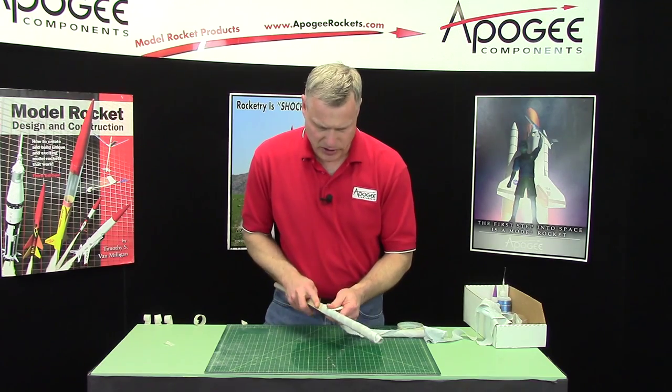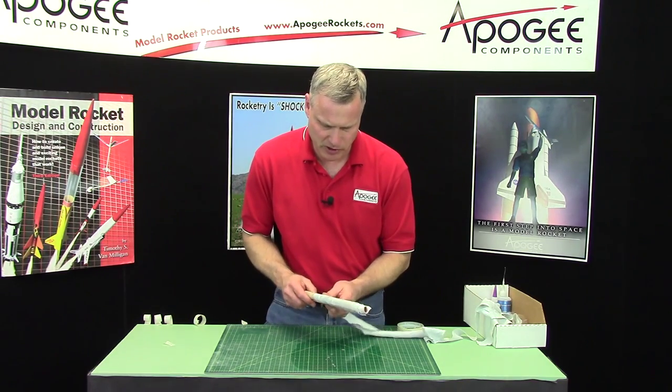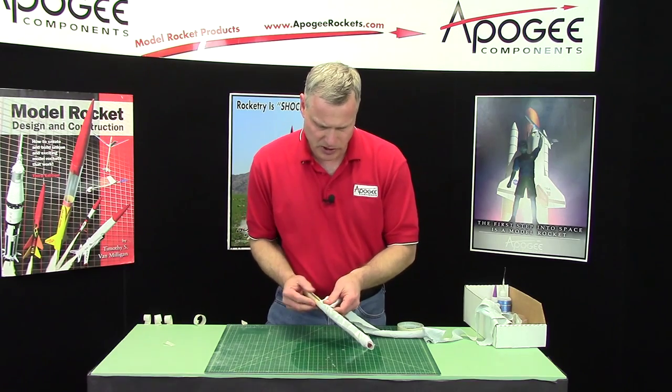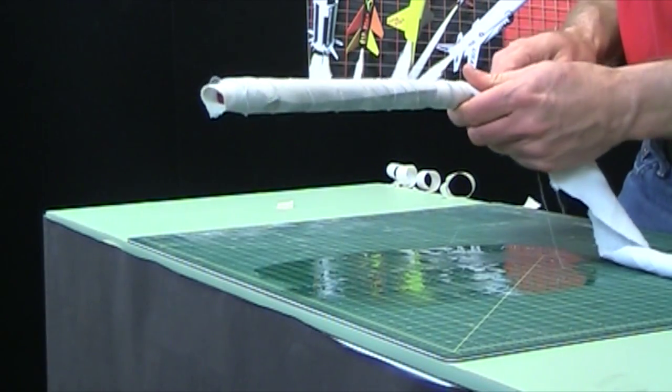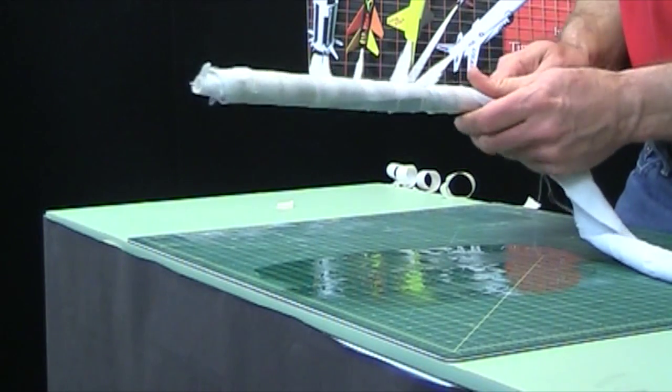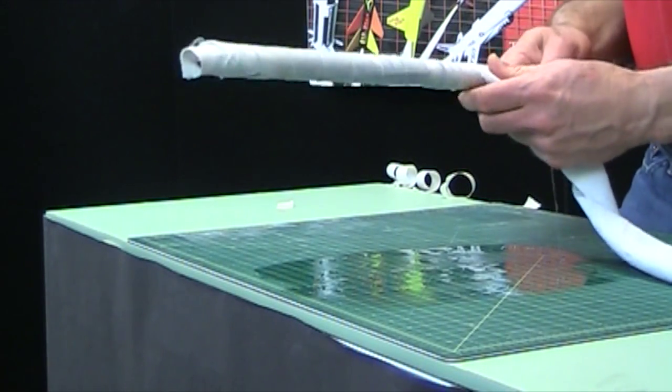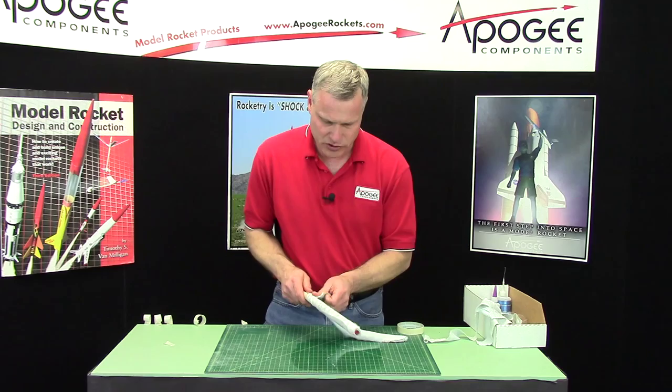I should mention that we didn't do any sanding or shaping to this blade. The reason is as it absorbs water the fibers swell up, so if you sanded it before you're going to have to sand it again later just to smooth it back down.